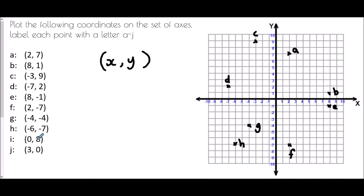For I and J: (0, 8) means in the x direction we move zero spaces — zero means stay the same — so we stay in the center but move up eight spaces. That puts point I right on the y-axis. J is (3, 0): move three places to the right but not up or down, so J remains on the x-axis.